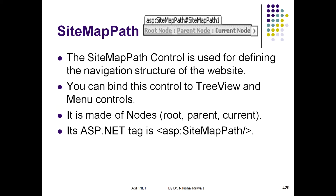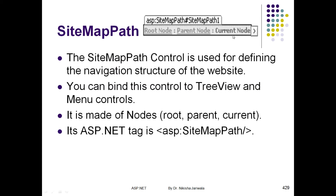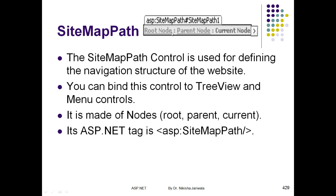So if we want to display the whole navigation structure, we can use SiteMapPath control, menu control, and TreeView control. We can bind these controls and see their properties. The first property is path direction — we can set the path display as root-parent-child or current direction, meaning root-parent-child display, or child-parent-root. We can specify the path direction.